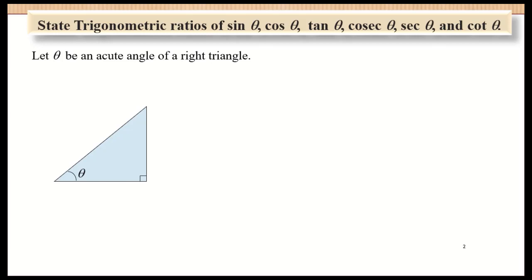Let theta be an acute angle of a right triangle. This is the hypotenuse. The side which is opposite theta is called opposite. The side which is beside theta, we call it adjacent. So we will have H, O, A.